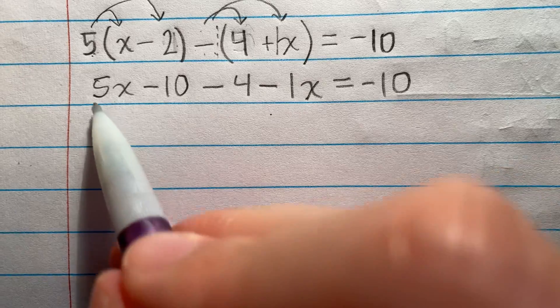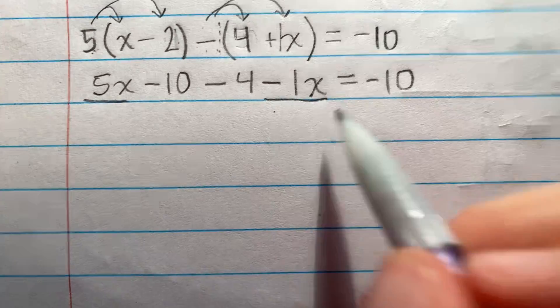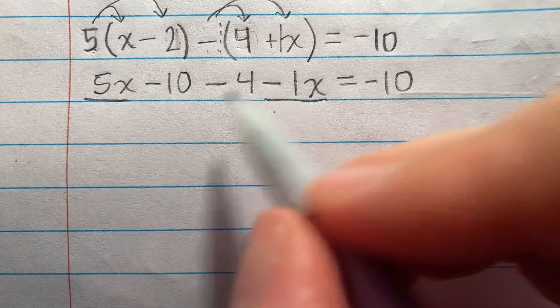Okay, now just like the last problem, I'm going to combine like terms. I have 5x and negative 1x. So 5 minus 1 is 4x.